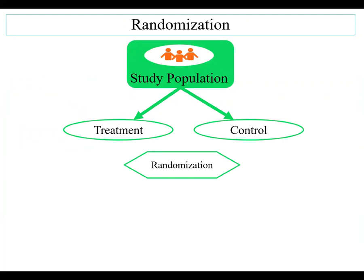This is the study population. Consider two groups: one is treatment, the other is control. Now we have to select participants in each group randomly.